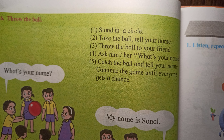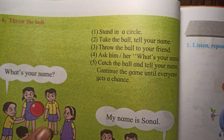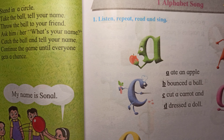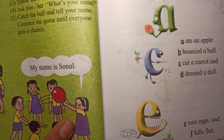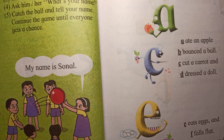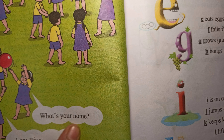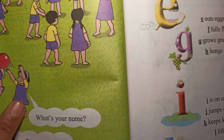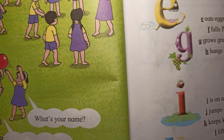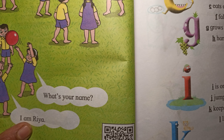In this picture, one boy is throwing the ball and asking the question: What's your name? And in the group, one girl is catching the ball and saying: My name is Sonal. Then Sonal throws the ball to another girl who catches it and says: I am Ria.